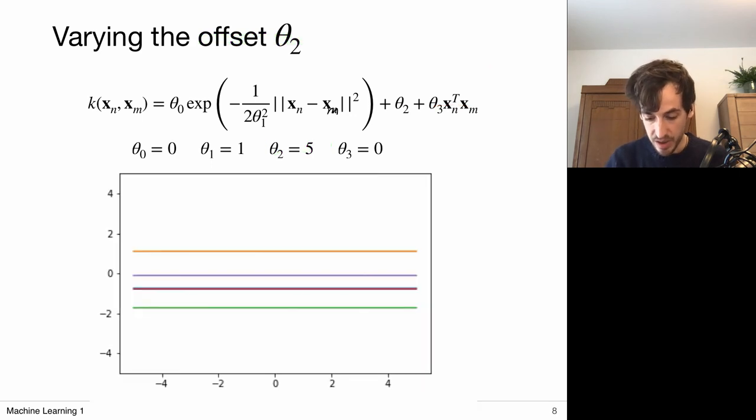Let's look at an extreme case. We set this exponential term off and the linear term off as well. Now it becomes really clear that we're looking at this offset theta two. This essentially means we have perfect correlation between my data points. If this point takes on a particular value, then all my other points have to take on the exact same value, because we have this correlation which doesn't depend on x. Each point is equally correlated with one another, which results in the fact that I'm now observing straight lines every time I sample a function from this Gaussian process.